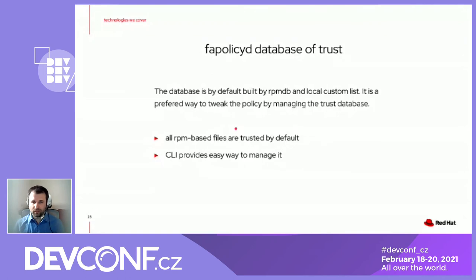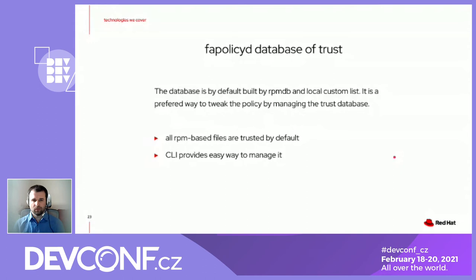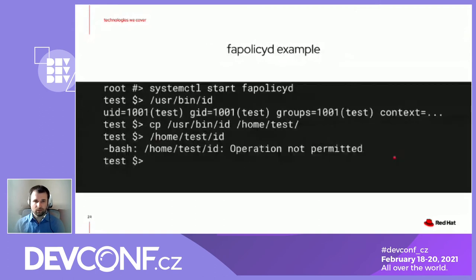What is the trust database? It's a database of files normally gathered from the RPM DB and a local customization list. This is the preferred way to tweak the policy in general. All the RPM files deployed on the system are automatically added to the trust DB, so you don't need to worry about those files — just provide the RPM, and if an administrator installs it, all the files are automatically trusted by FAPOLICYD. There's a command line interface providing an easy way to manage it.